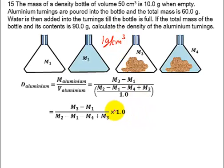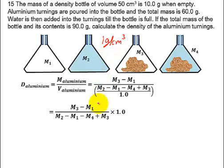The density of water is 1 gram per centimeters cubed. That is why we have this value here — instead of 0.8, we have 1 — because the density of the liquid used here is water. Otherwise everything else remains the same. Now, in this question, you realize that step two has not been given, where we measure the mass of the liquid and the density bottle. But if we want to use this expression, we can get this value because we already know the mass of an empty density bottle, which is 10 grams.